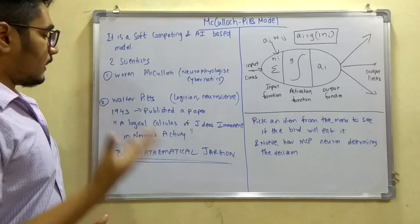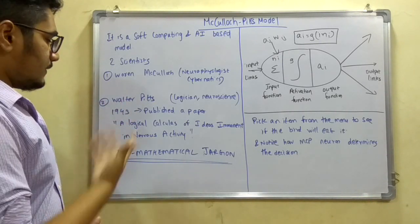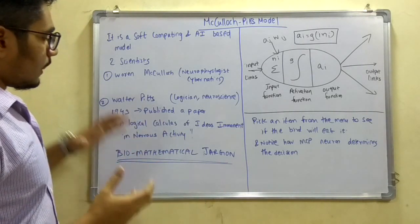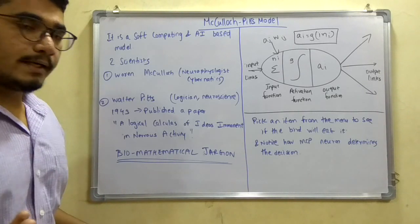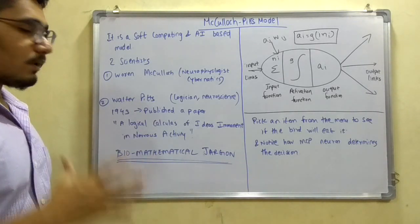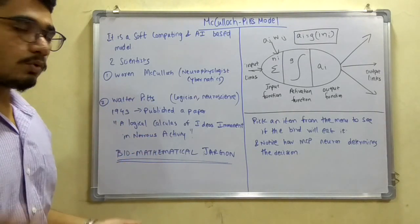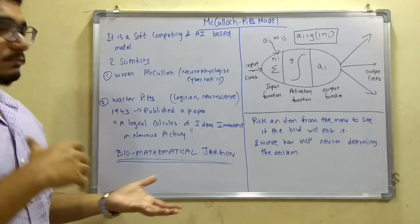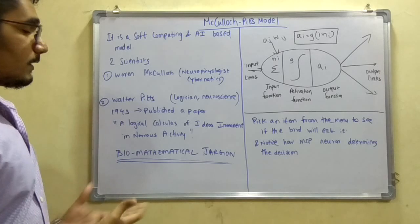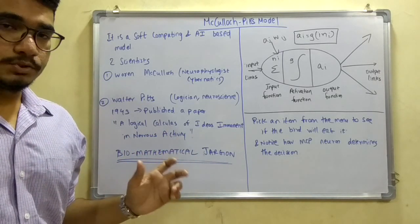In the year 1943, they published a paper which says, or like the abstract was, a logical calculus of ideas immanent in nervous activity. So this you may find a little complicated. In terms of like both biology and both AI, both technology are incorporated into this sentence. So it is moreover called a bio-mathematical jargon.